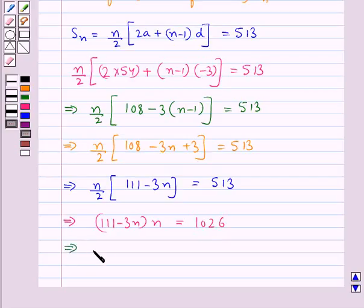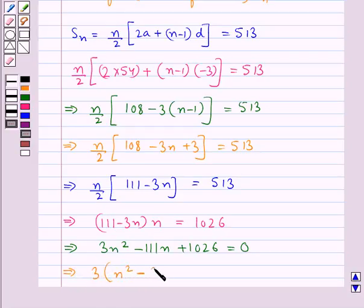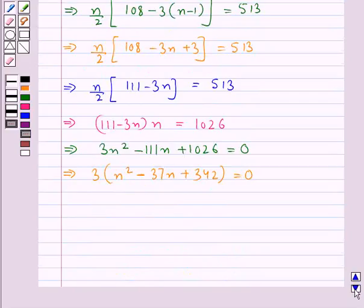From here we get 3n² - 111n + 1026 equals 0. Now we take 3 common. Inside the bracket we have n² - 37n + 342, this equals 0.